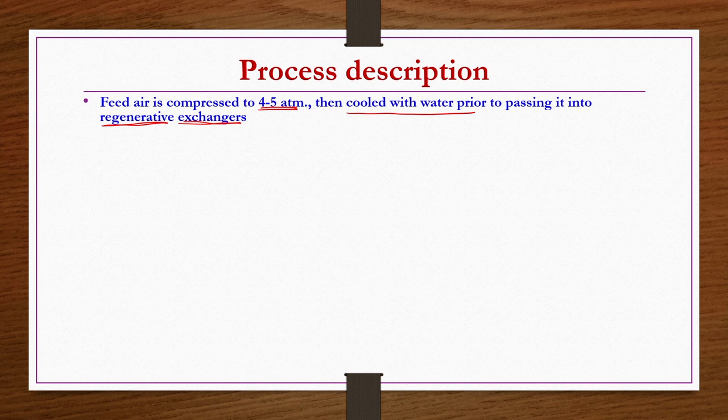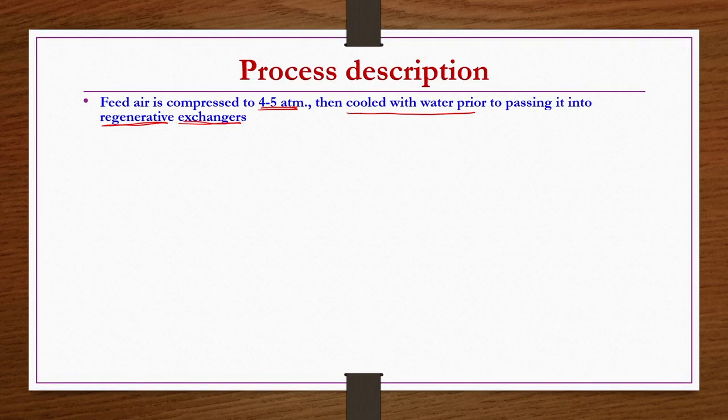After this exchanger step, the remaining fractionation of air is the same across processes. For low purity oxygen production using the Linde-Frankel cycle, if you wanted to produce high purity oxygen using the Kellogg cycle, the only difference is that regenerative exchangers would be replaced by recuperative exchangers — the fractionation of air afterward is the same.